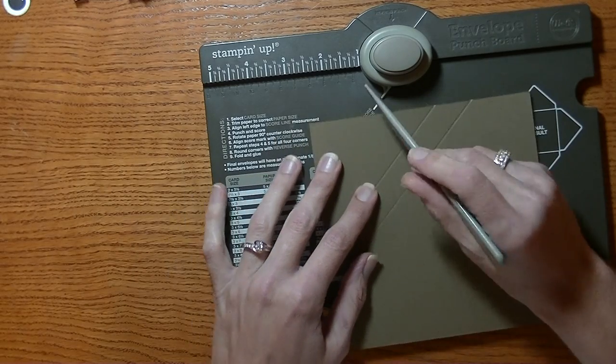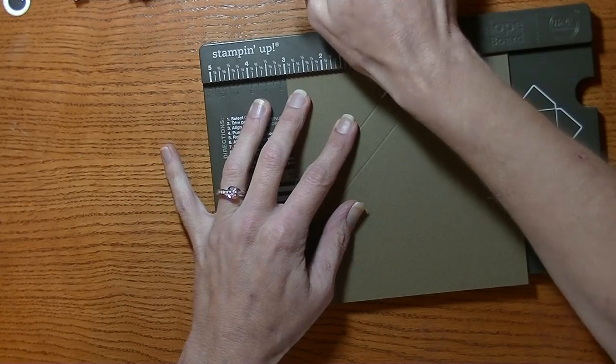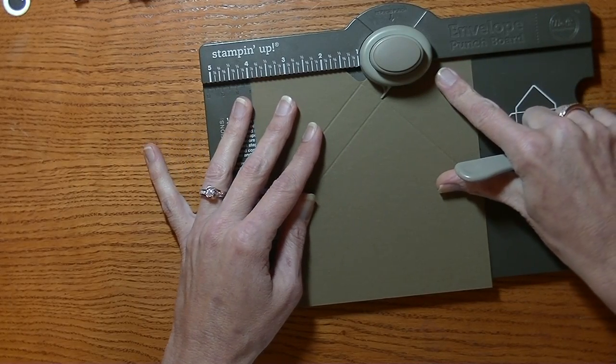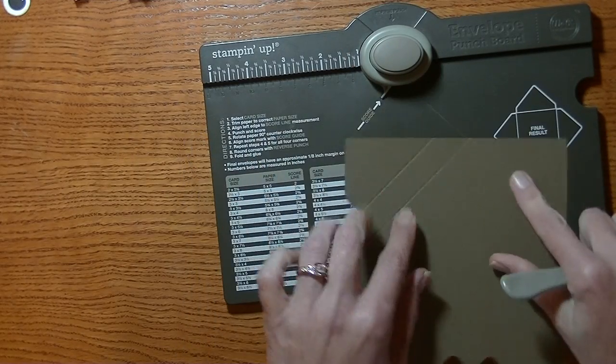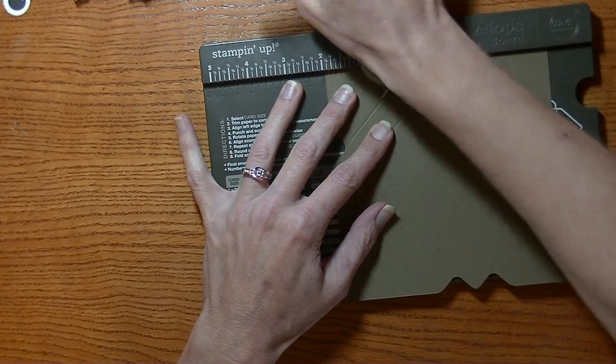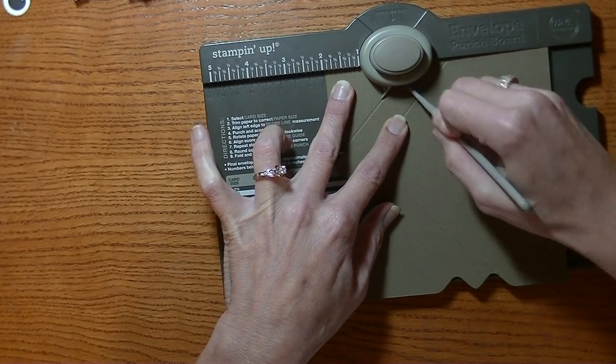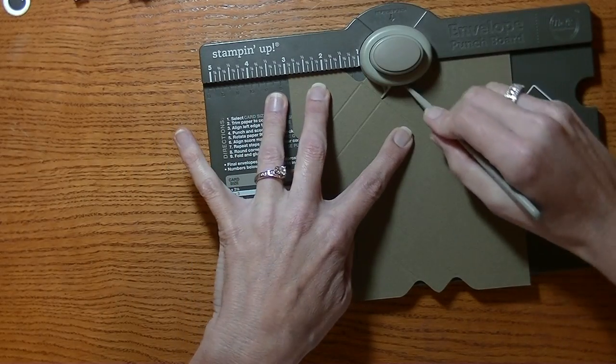You're going to turn it, and now you're going to line up the little doohickey thing there with your score mark and then punch and score. Line it up again, punch and score. Turn it again, so the same thing. Each turn, you're going to line it up the score mark with the doohickey thing. Punch and score. Punch and score.